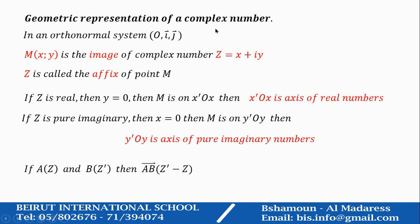Geometric representation of a complex number. Before, we said that, or we talked about the algebraic form, which is A plus IB, where A and B are in R.